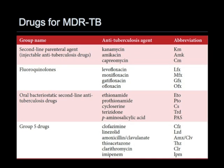Drugs for the treatment of MDR-TB include the so-called second-line parenteral injectable agents: kanamycin, amikacin, and capreomycin. The quinolones, including levofloxacin and moxifloxacin, which are the most active. Oral second-line agents such as ethionamide, prothionamide, cycloserine, terizidone, and para-aminosalicylic acid or PAS. And so-called group 5 drugs which have varying activity and often severe side effects.